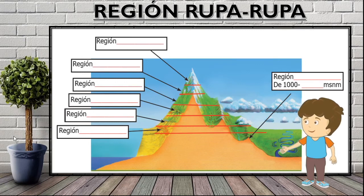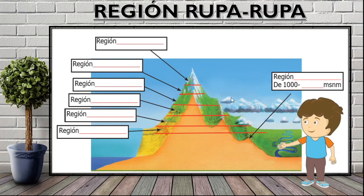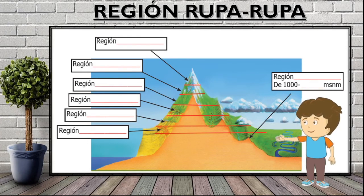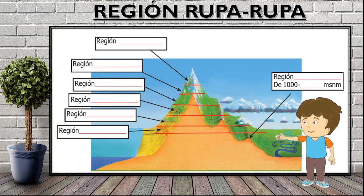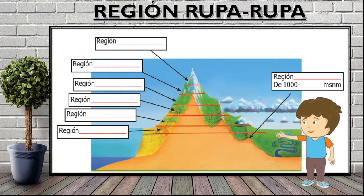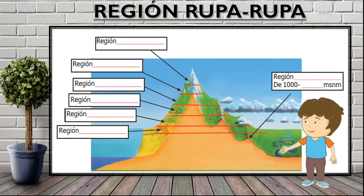Geography, also known as the Selva Alta. Let's start. In your book we have this first image, in which we make a little review of the regions that we have already seen and what is the region that we are going to see today.